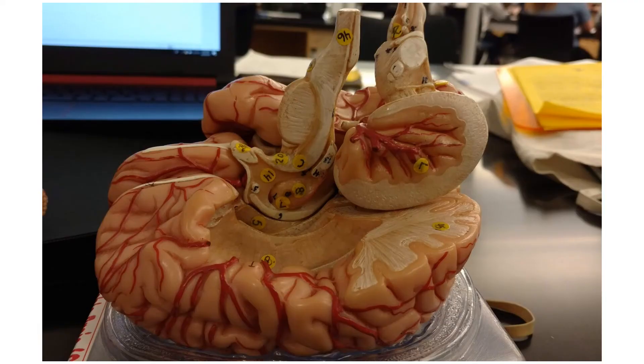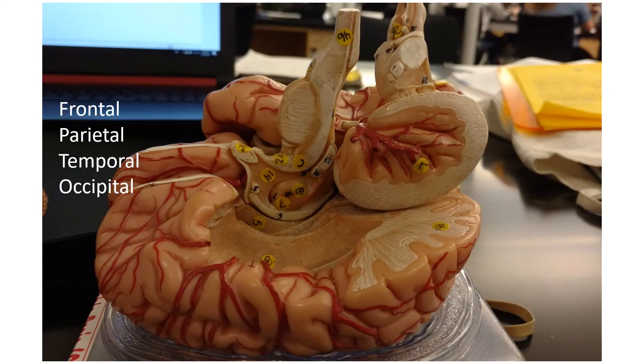The cerebrum has lobes that correspond with the bones of the cranium: frontal lobe, parietal lobes, temporal lobes, and the occipital lobe. There's also a hidden fifth lobe that you can't see except on a dissectable model when you pull the brain stem out — that is the insula. Just think of it as hidden, insulated inside the brain.